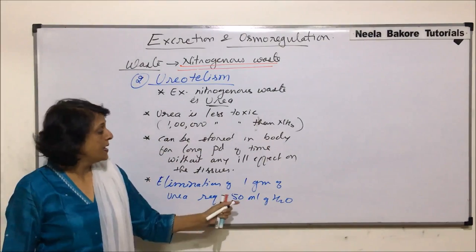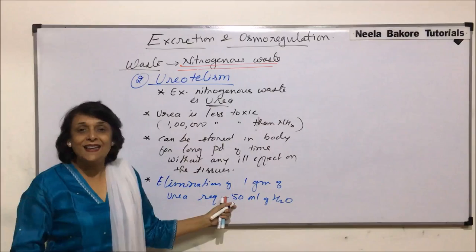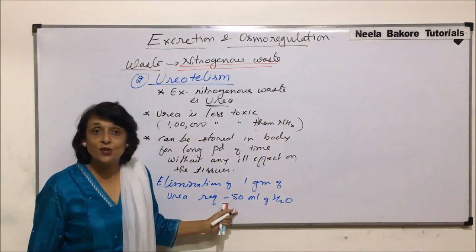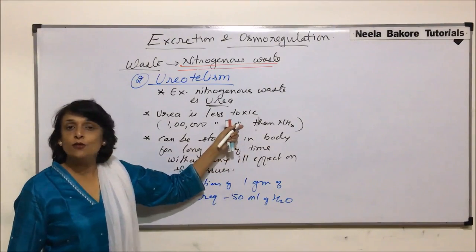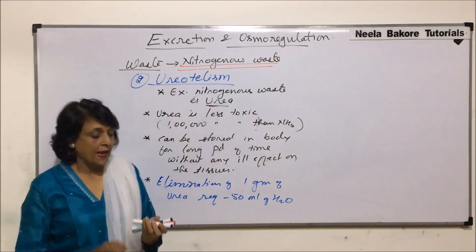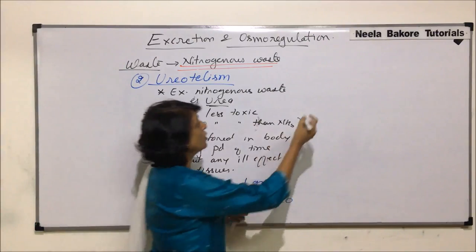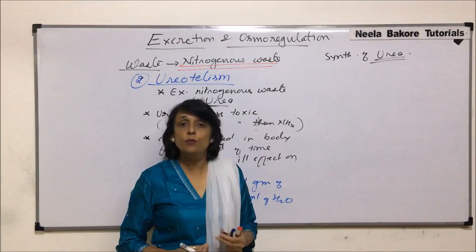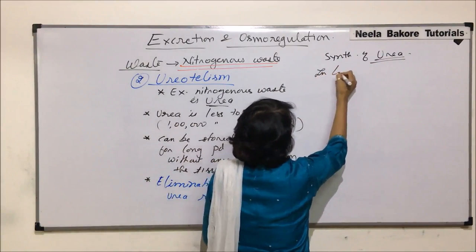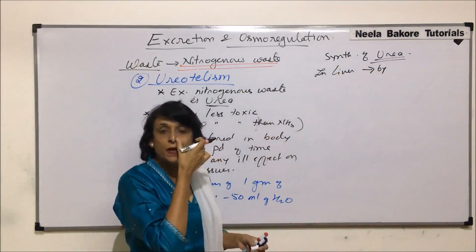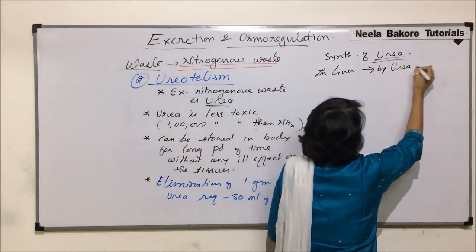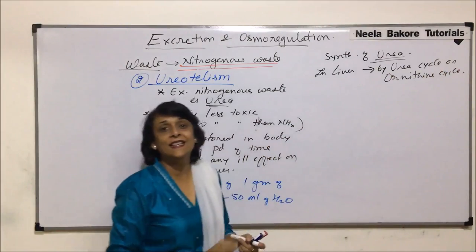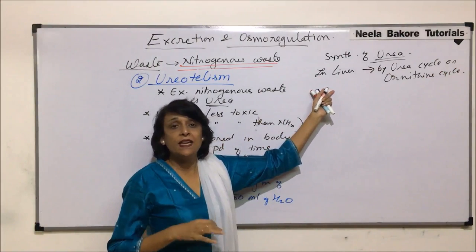Compared to 300 to 500 milliliters required for ammonia elimination, 50 milliliters is much less. So organisms that cannot afford to lose much water, or terrestrial organisms that want to conserve water, prefer losing nitrogenous waste as urea instead of ammonia. Synthesis of urea in higher organisms like human beings takes place in the liver by a cycle known as the urea cycle or ornithine cycle.